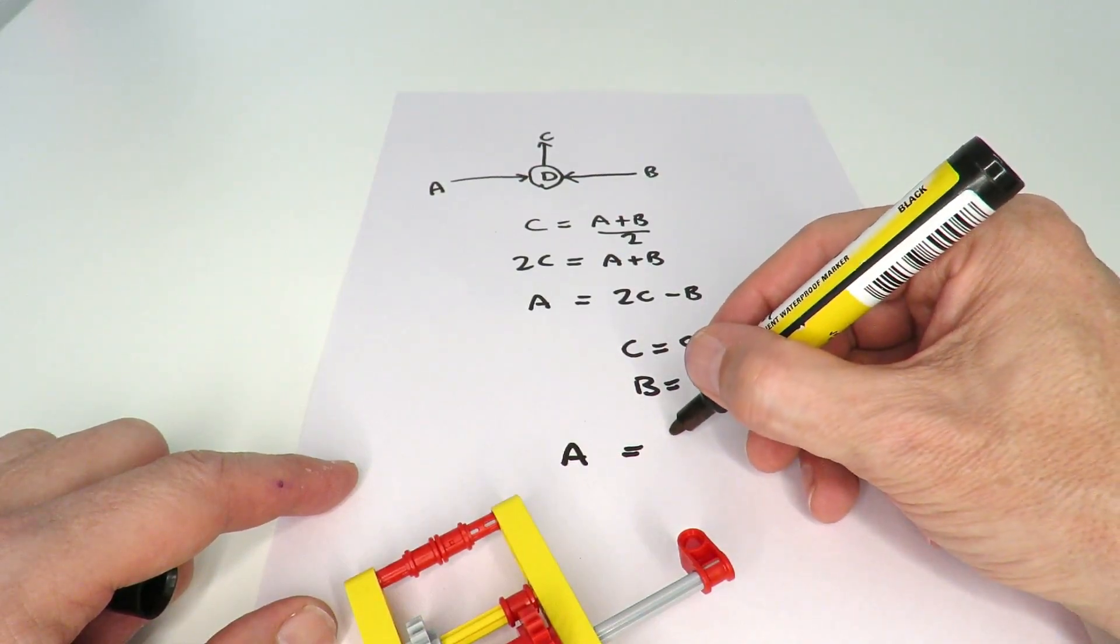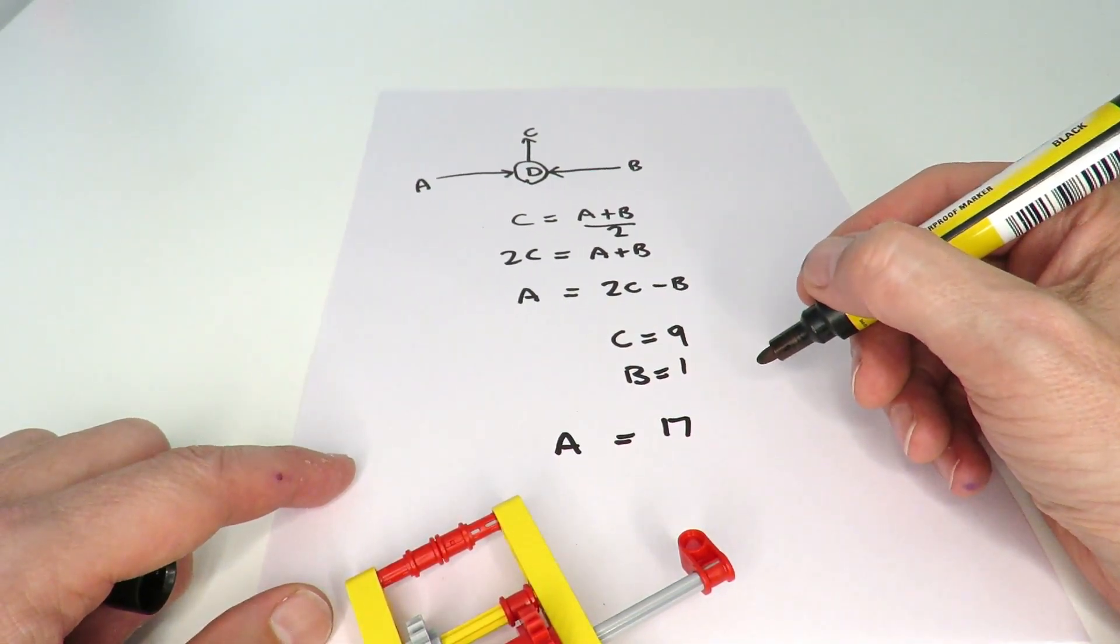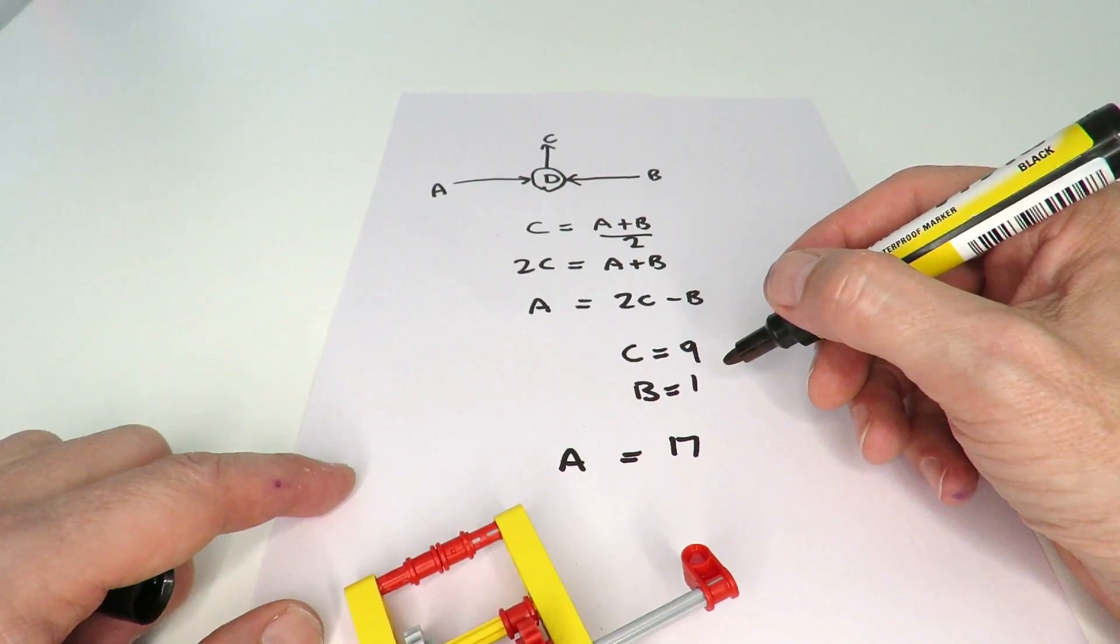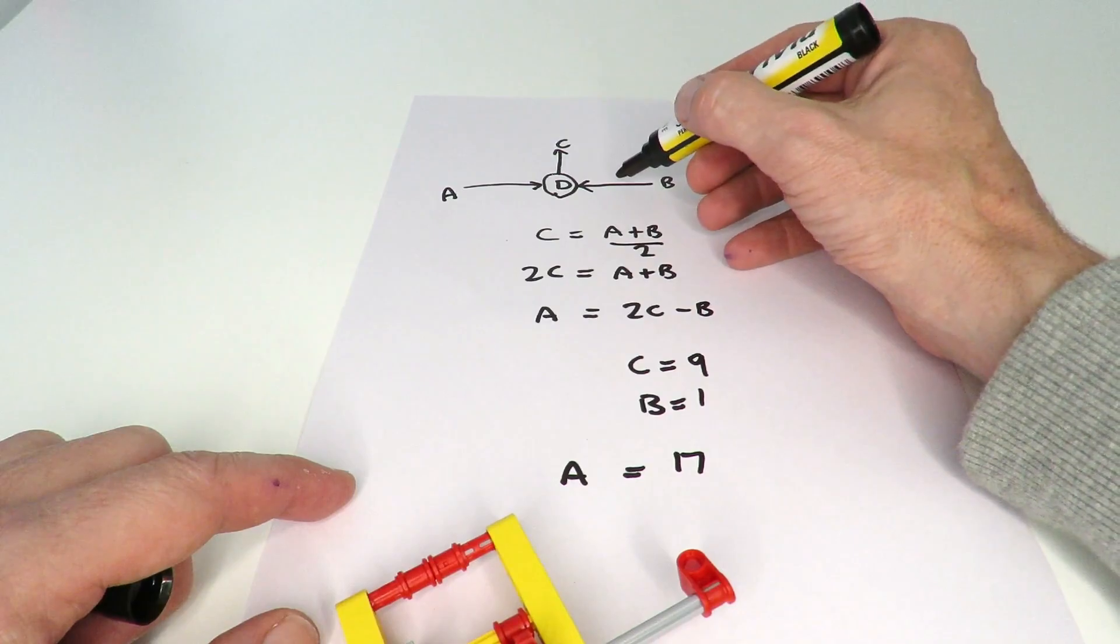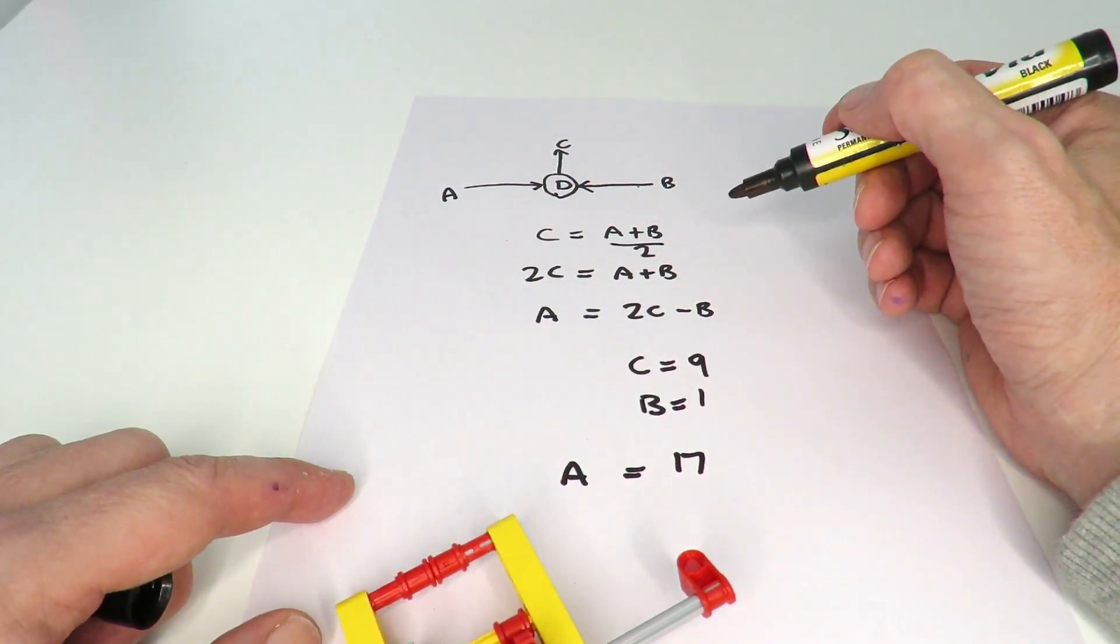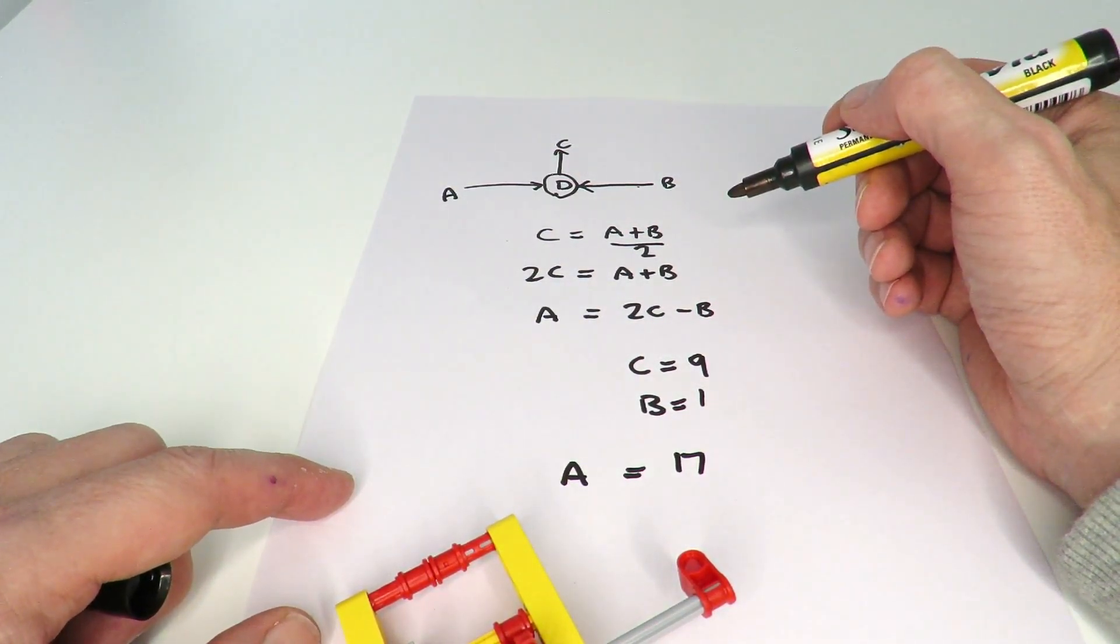So that means that the gearing ratio for A, if B turns around once, then the ratio between B and A will be 17 to 1.